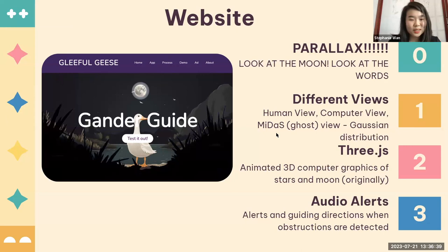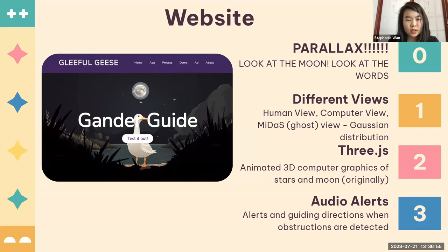There are different views available in the final demo. We have the human view, which is just our current video feed. We have the computer view, which will be object detection. And we have the MIDAS or ghost view, which we apply a Gaussian distribution filter on to help aid with our process. You'll also see these in the demo.